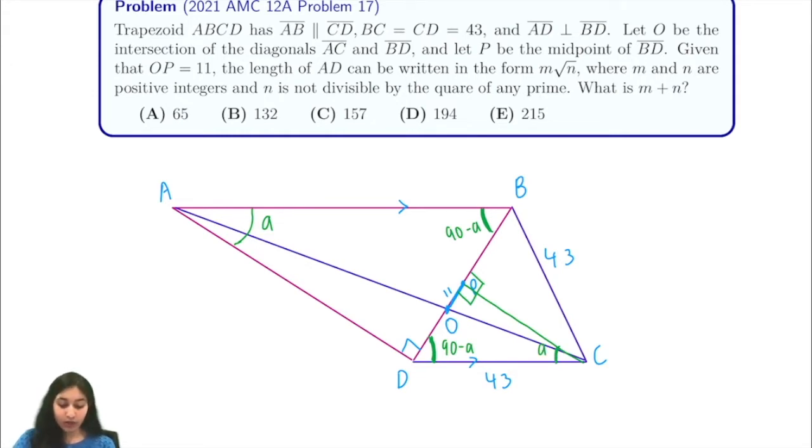If we look at our triangle BTC, this angle will also be 90 minus theta, because this triangle is isosceles. And similarly, this will be equal to A. So now we have a lot of these angles marked down.